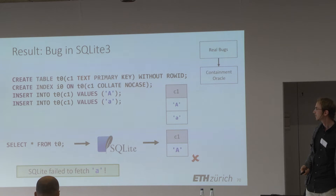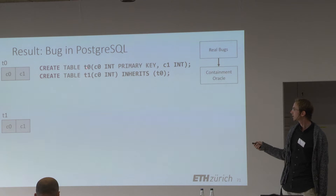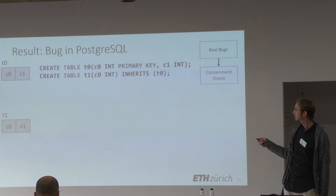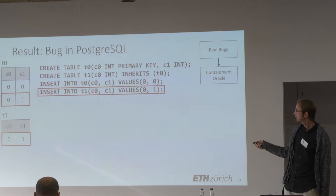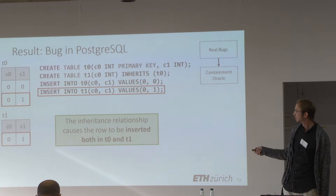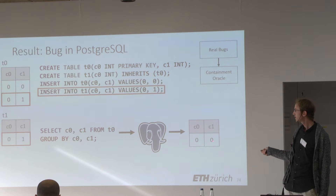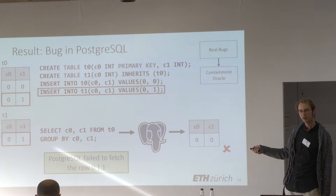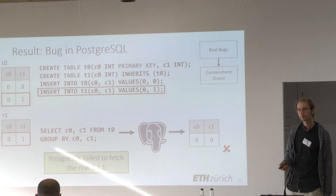Here is a Postgres bug — the only one found with the containment oracle in Postgres. We create two tables where T1 inherits from T0. Postgres is the only system we tested that supports table inheritance. We insert value 00 into T0 and value 01 into T1; due to inheritance, 01 is also inserted into T0. When fetching all distinct rows using GROUP BY, Postgres unexpectedly only fetches a single row, failing to fetch 01. The reason is that developers forgot to consider inheritance relationships in the GROUP BY implementation. This was quickly fixed.